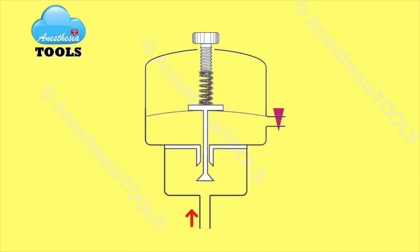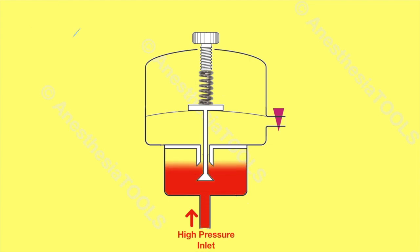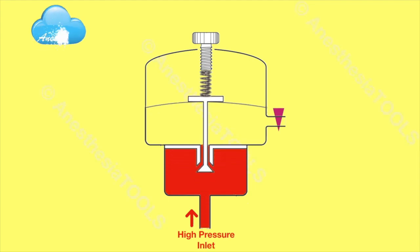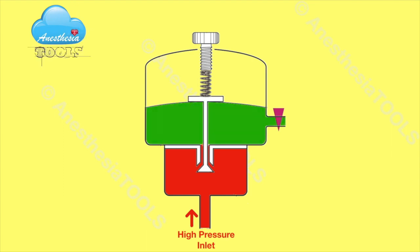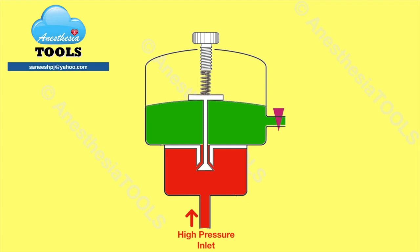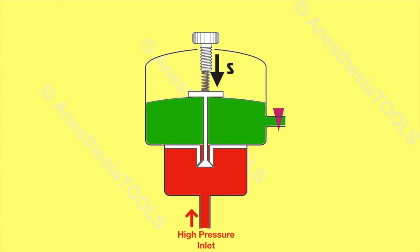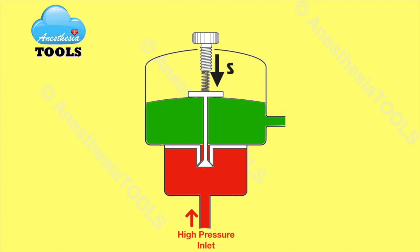Here, the gas from the cylinder flows into the inlet. In this diagram the outlet is closed. The gas flows across the valve into the low pressure chamber. As the diaphragm is pushed by the gas in the low pressure chamber, the valve seat moves up, closing the valve. Once the flow meter is open and the gas flows out from the low pressure outlet, the whole system assumes a new equilibrium.